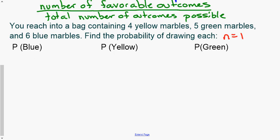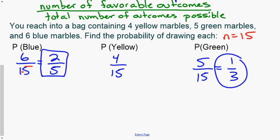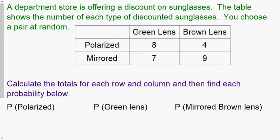Adding them up, we find n, our total number, is 15. You need the total number of outcomes possible. The probability of blue is six out of 15, which reduces to two-fifths. Yellow is four out of 15, which doesn't reduce. Green is five out of 15, which reduces to one-third. You are expected to reduce all answers. That is theoretical probability — what should happen in theory.